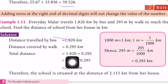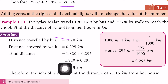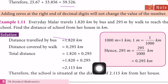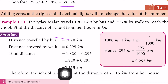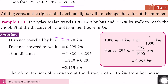So 1.820 plus 0.295 — while adding these two numbers, we get 2.115 kilometers. You can use the place value grid to add these two numbers. But if you are confident, you can add directly without any mistake. Better use the place value grid to add decimal numbers as practice first, then you can add directly.